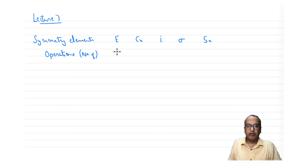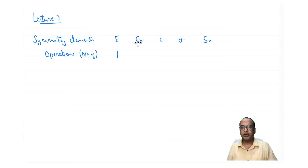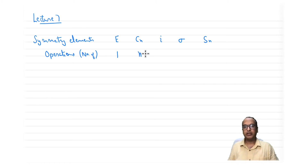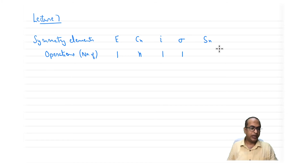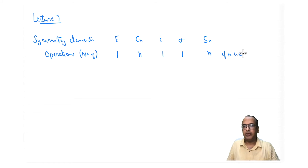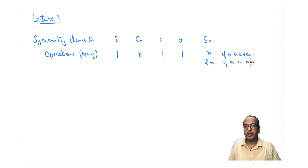E will generate only one operation. An nth-order Cn axis will generate n operations. i will generate only one operation. Sigma will generate only one operation. Sn will generate n operations if n is even, and 2n operations if n is odd.